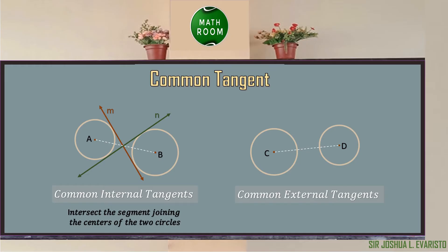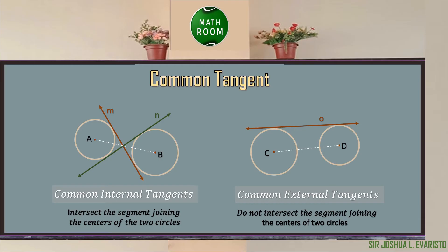However, the common external tangent does not intersect the segment joining the centers of the two circles. In the figure, we have circle C and circle D, and the segment joining the two circles is segment CD. An example of a common external tangent is line O, because it does not intersect segment CD. Another example of a common external tangent is line P.